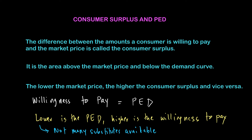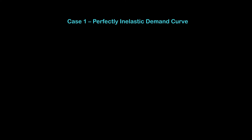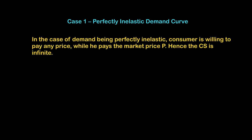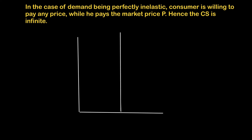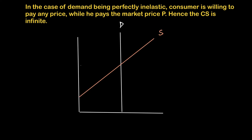Let's look at two extreme cases: a perfectly inelastic good and a perfectly elastic good. In the case of a perfectly inelastic good, the consumer is willing to pay any price. The demand curve is perfectly vertical, meaning the consumer is willing to pay any price. With an upward-sloping supply curve and equilibrium price p0, what we're willing to pay is any price, so the consumer surplus in this case is infinite.